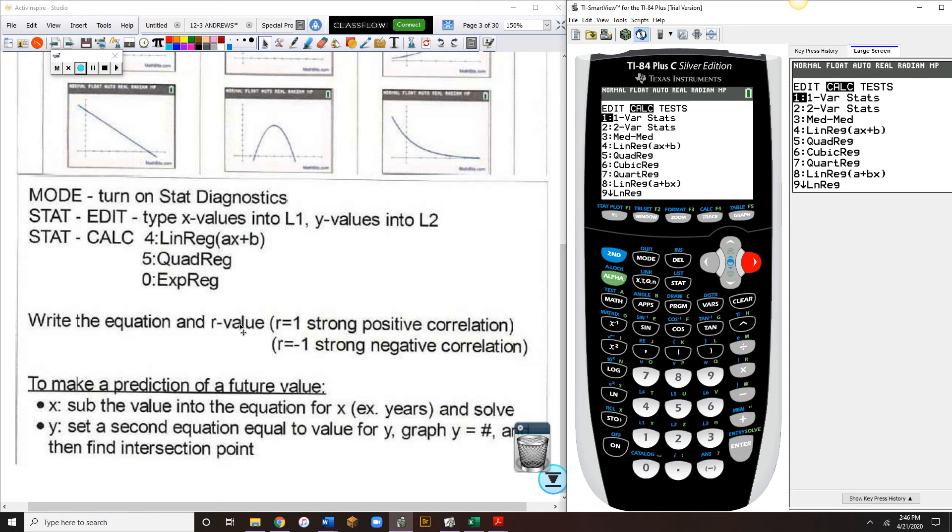The R value. Remember R when it comes to linear is a strong positive. R when it's negative 1, that's strong negative. So the closer you are to 1 for an R value, the better the data fits the model.